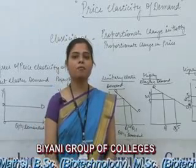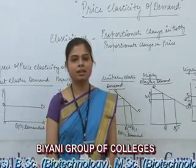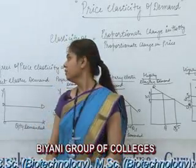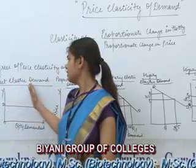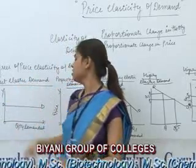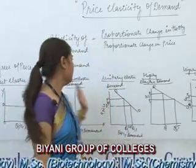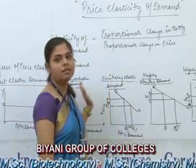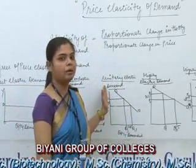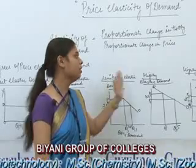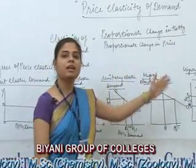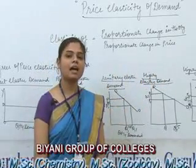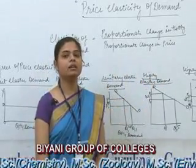There are 5 degrees of price elasticity. First one is perfectly elastic demand. Second is perfectly inelastic demand. Third one is unitary elastic demand. Fourth is highly elastic demand. And fifth is highly inelastic demand.